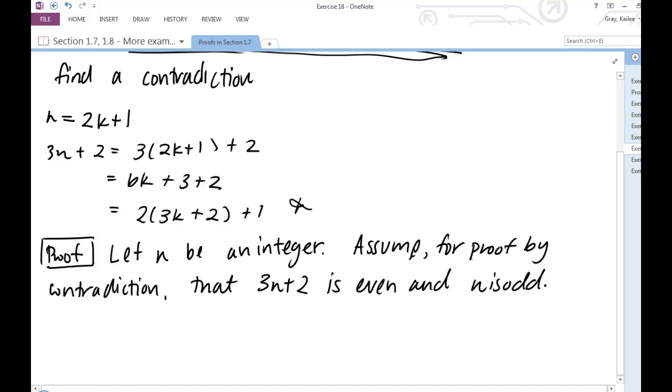So it should be clear to the reader, because we're doing a proof by contradiction, that what we're trying to prove is the negation of 3n plus 2 is even, and n is odd. So if n is odd, by definition of odd integers, n is equal to 2k plus 1 for some integer k.